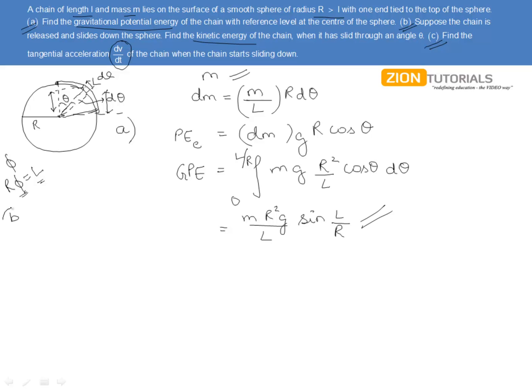Proceeding with the second part of this question in which we need to find out the kinetic energy of the chain when it has slid through an angle theta. Now, we know that when the chain is released from rest and slides down through an angle theta, the kinetic energy of the chain is actually given by the kinetic energy equal to the change in potential energy. So, let us employ the same over here, so we can write it as M R square G by L sine L by R minus, this is the initial potential energy, that is the total one, minus R square G by L cos theta d theta.